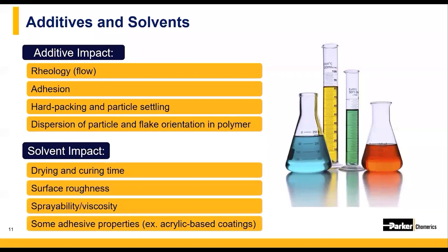Solvents, on the other hand, are added in much greater quantities — usually anywhere from 30 to 70 percent by weight. Solvent blends of different evaporation speeds are used depending on the application properties and design constraints, to modify the drying and curing time. For example, a self-leveling application would require slower evaporating solvents to allow the material to flow and settle properly. Solvent evaporation rate can also impact final surface roughness and viscosity during spraying.